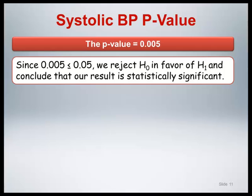The resulting p-value is equal to 0.005. Because this value is less than our significance level of 0.05, we reject the null hypothesis in favor of the alternative hypothesis and conclude that the result is statistically significant — that is, the true population mean systolic blood pressure is greater than 140. People will often say something like: in this population of patients, the true population mean systolic blood pressure is statistically significantly greater than 140, based on a hypothesis test conducted at the 0.05 level.